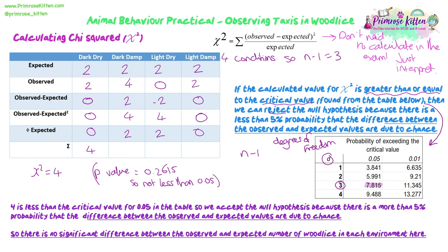That is the summary of how to do the animal behavior practical with wood lice, how to analyze your results, and how to calculate and interpret the chi-squared value. I hope that was helpful. The next practical in this series is going to be looking at blood glucose in urine.